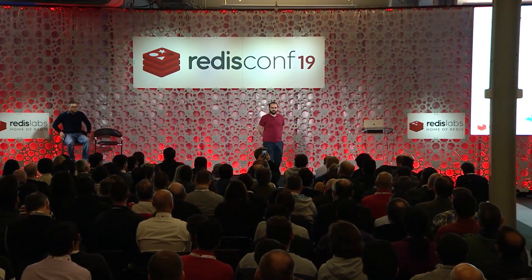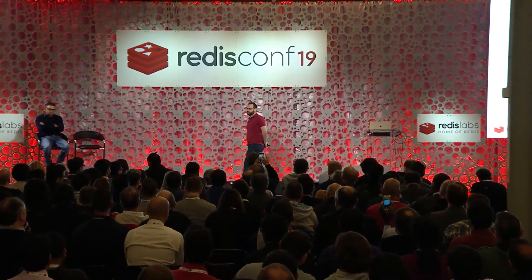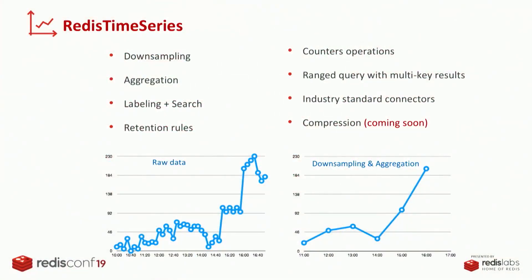In Redis Labs, we wanted to create a Redis native data structure for time series. We needed several specific features that we must have in a production-ready time series database. Downsampling is a big feature in time series databases where you want to save long-term data but still keep a small footprint in memory. By having multiple downsampling rules on a key, you can have any aggregation automatically downsampled to a different key.